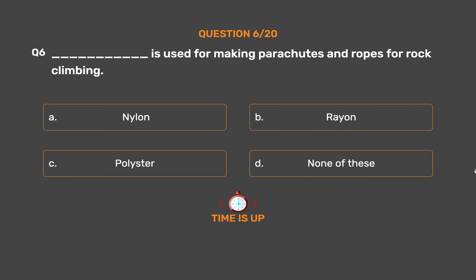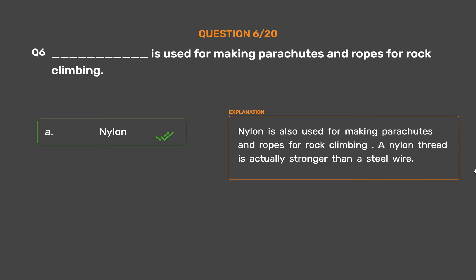The correct answer is Option A: Nylon. Nylon is also used for making parachutes and ropes for rock climbing. A nylon thread is actually stronger than a steel wire.